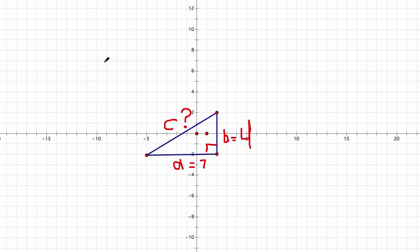Let's quickly write the Pythagorean theorem. A squared plus B squared must equal C squared.